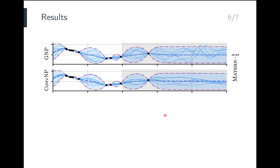Let's train a GNP on samples from a GP with a Matern 5.2 kernel, and compare samples of the trained GNP to samples of the convolutional neural process, CONVNP in short, which is among state-of-the-art and also has translation equivariance built in. The models are trained in the gray regions, and then evaluated outside their training range — possible only because translation equivariance is built in. Note that both models nicely fill up the ground truth error bars. However, samples of the CONVNP appear compressed and too smooth, whereas samples of the GNP look nearly indistinguishable from samples of the ground truth.